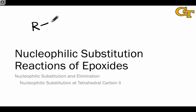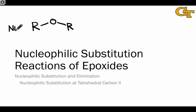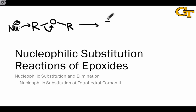Ordinary ethers, which have the structure ROR, are generally not good electrophiles for nucleophilic substitution reactions. Using an ether in a nucleophilic substitution reaction would involve something along the lines of kicking off an alkoxide leaving group, either via an SN2 or an SN1 type mechanism. And the problem with doing this is that alkoxide is not a good leaving group, despite the electronegativity of the oxygen atom.